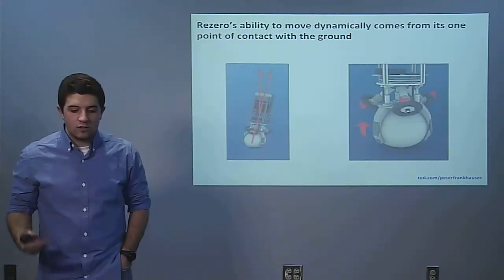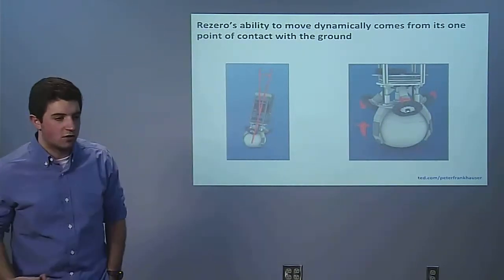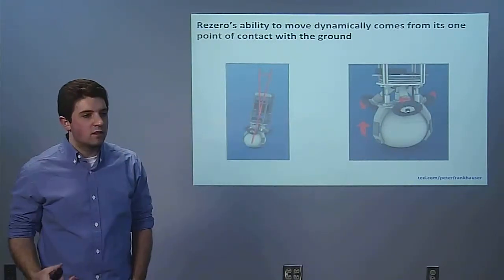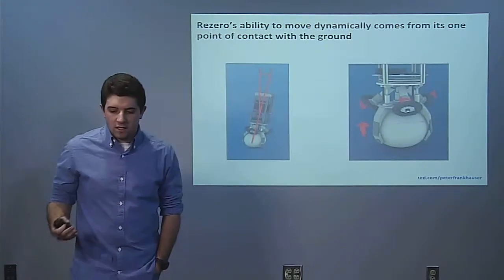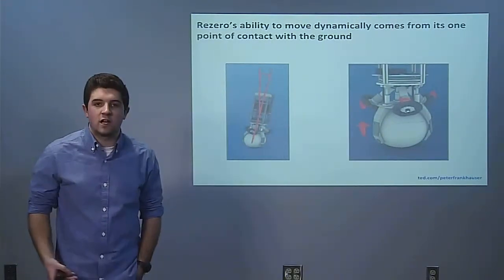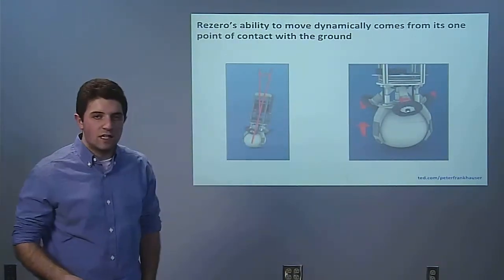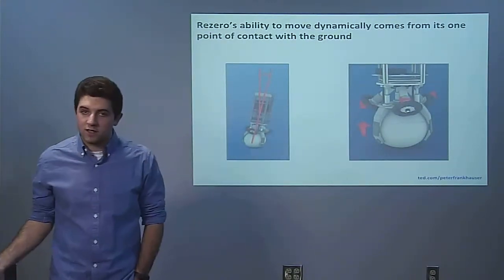Now according to the researchers in the Autonomous Systems Lab at ETH Zurich, its single contact point is what makes it move dynamically. You would think its instability would come from its one contact point, but it's actually its instability that leads to its stability and its ability to accelerate at three meters a second squared.